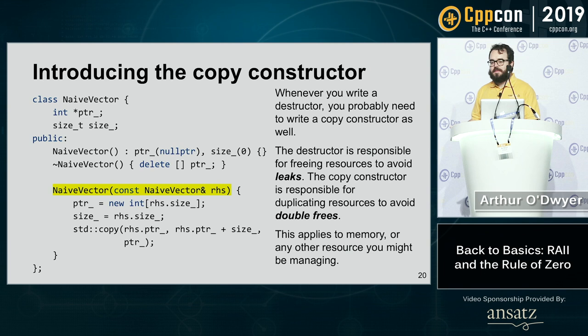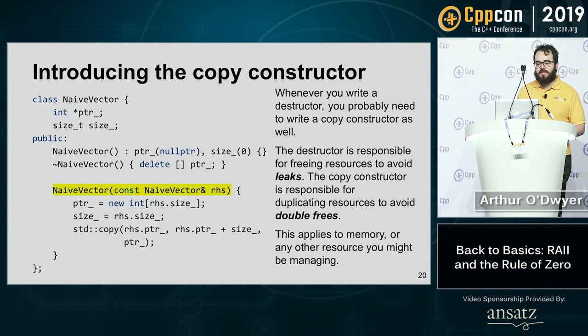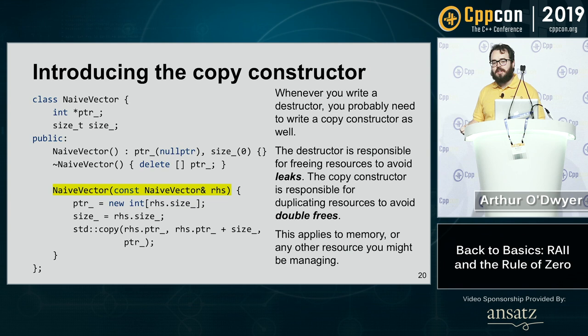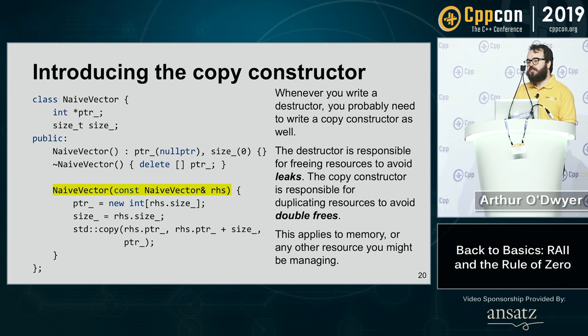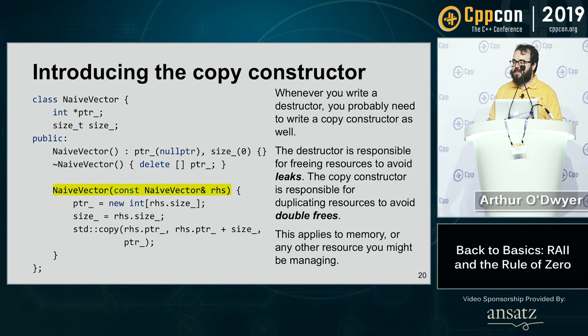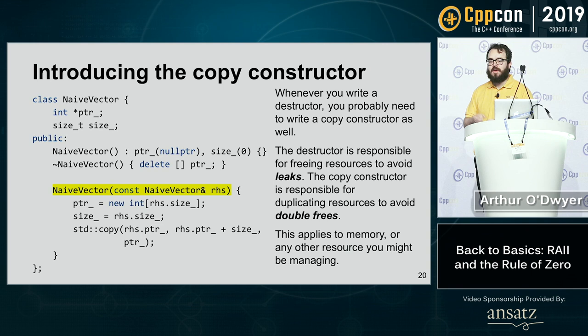To fix this, we introduce the copy constructor. When we make a copy of a naive vector, we need to do something special to duplicate the resource so that calling the destructor doesn't cause double-frees. When you write a destructor, you probably need to consider your behavior on copy. This applies to memory, and also to any other resource you might be managing — for example, an RAII class that takes a lock on a mutex.